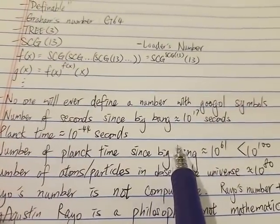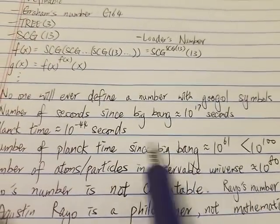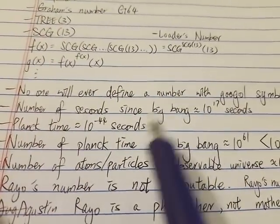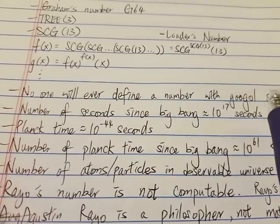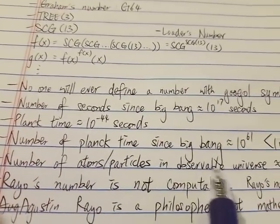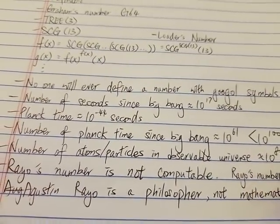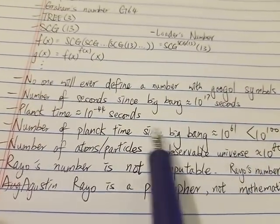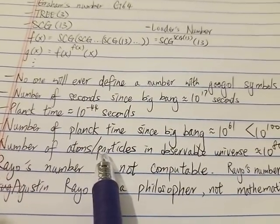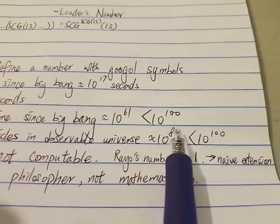So even if you somehow could write a googol symbols since the Big Bang, there's another problem. That is, there's not enough space in the observable universe for you to write out your number. Because the number of atoms or particles in the observable universe is just around 10^80, which is a big number.